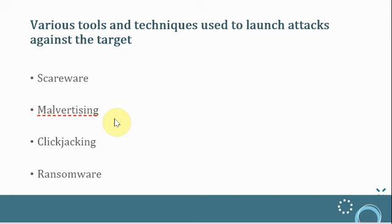Next is clickjacking, a malicious technique that tricks users into revealing confidential personal information or giving control of their system by clicking on web pages. Clickjacking takes the form of embedded code or a script that executes without the user's knowledge. Cyber criminals exploit loopholes in browsers and platforms to launch this type of attack — for example, clicking a button that appears to perform one function but actually performs another.